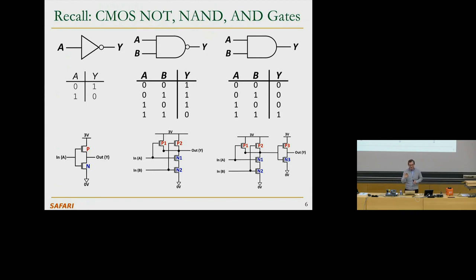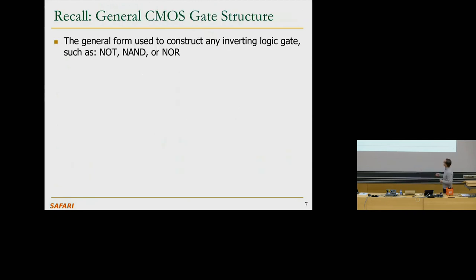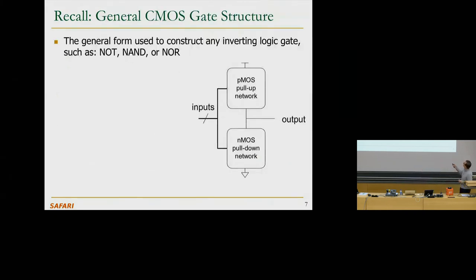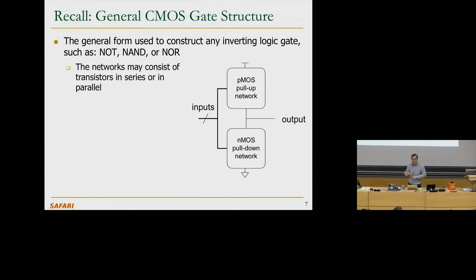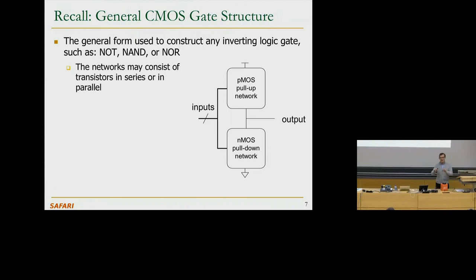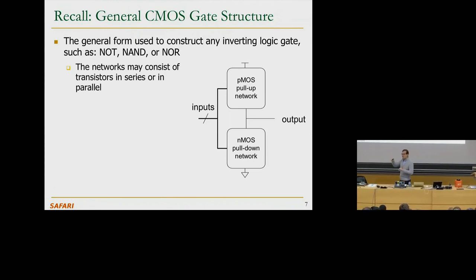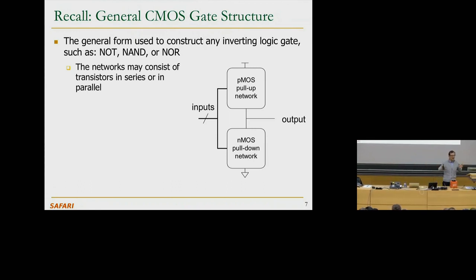This is the general CMOS gate structure. We can use it to build many inverting logic gates — the PMOS pull-up network pulls up to VDD (three volts) and the NMOS pull-down network pulls down to ground. The networks may consist of transistors in series and parallel, similar to what you've seen with resistors. If things are in series, they're slower because resistances add up; if in parallel, they're faster because you have parallel paths.